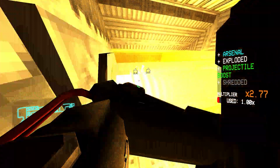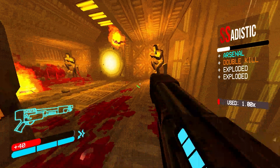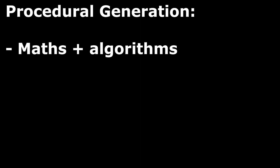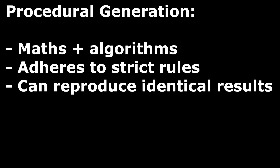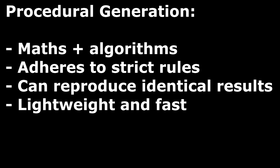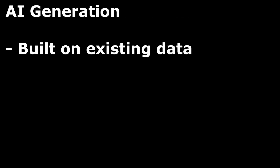So now we know what they both are, let's look at the key differences. Procedural generation is built on maths and algorithms, and set rules are created by the developer that these algorithms have to follow. Anything created with a seed will be the exact same on every device, and it tends to be pretty lightweight and doesn't require many resources to run.